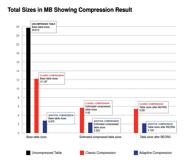Since tables that use adaptive compression have a smaller storage footprint, with the same amount of data concentrated on fewer data pages, they require less physical I/O for data to be loaded into a buffer pool. Thus, adaptive compression can also improve query performance.